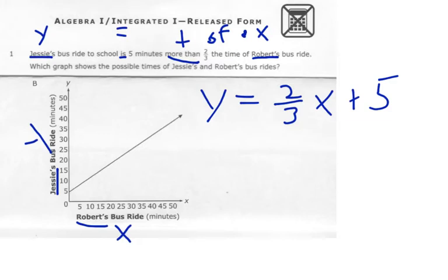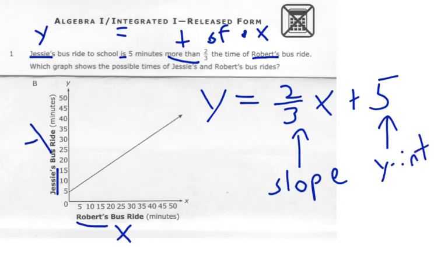So two-thirds represents my slope. So the number in front of the variable, the x, is your slope. And that's rise over run. And five represents my y-intercept. So answer choice B is what I'm looking at here.